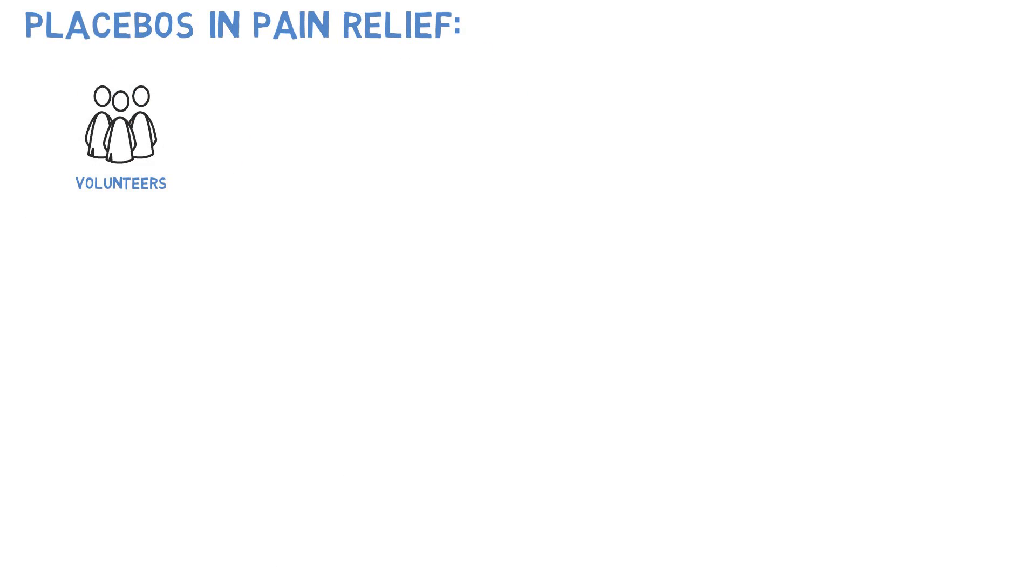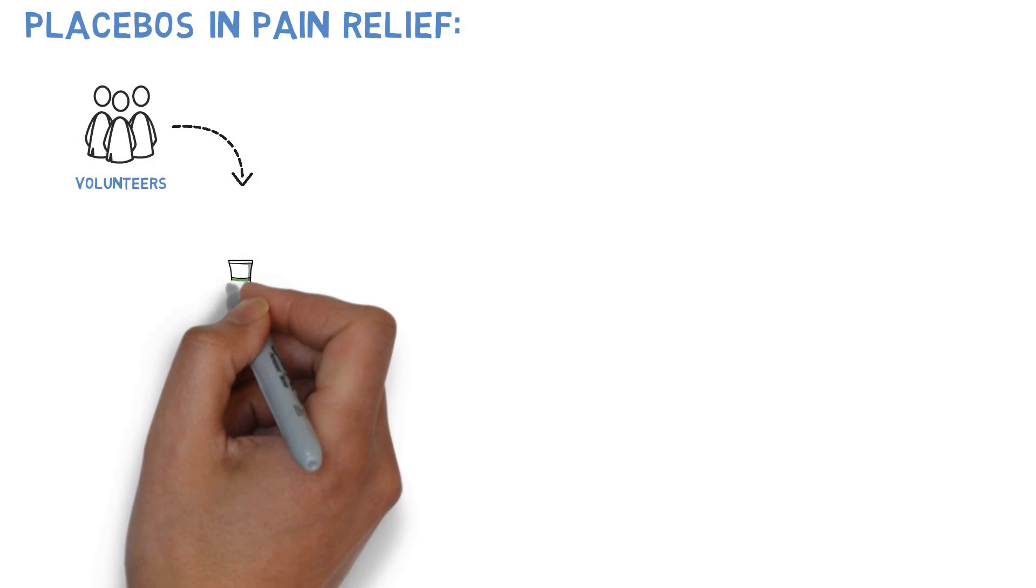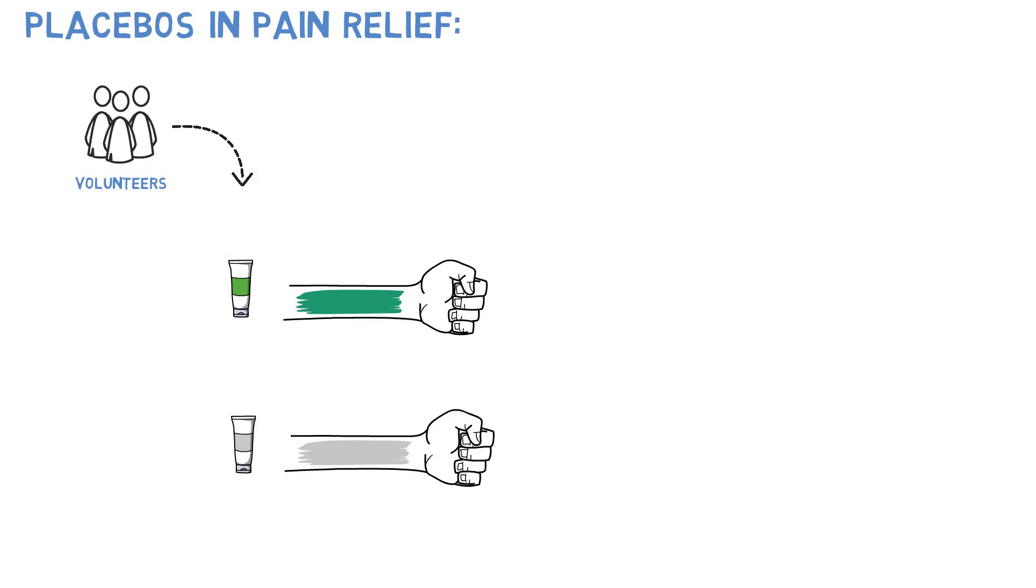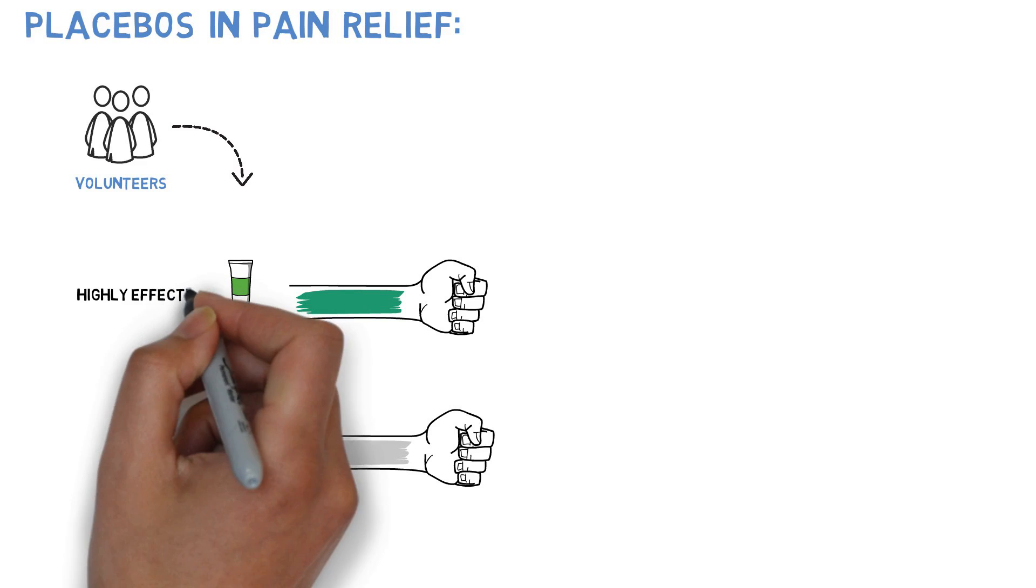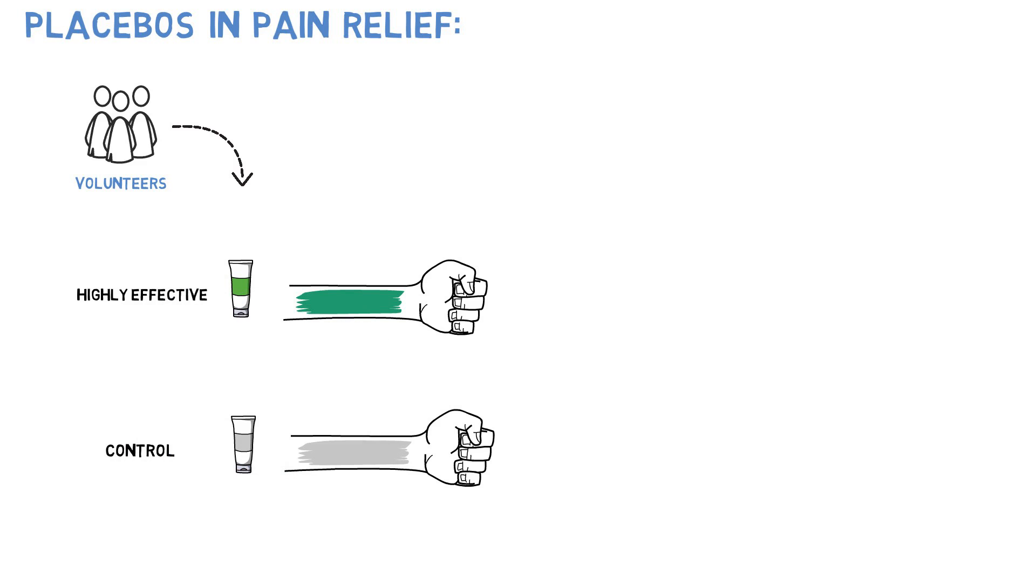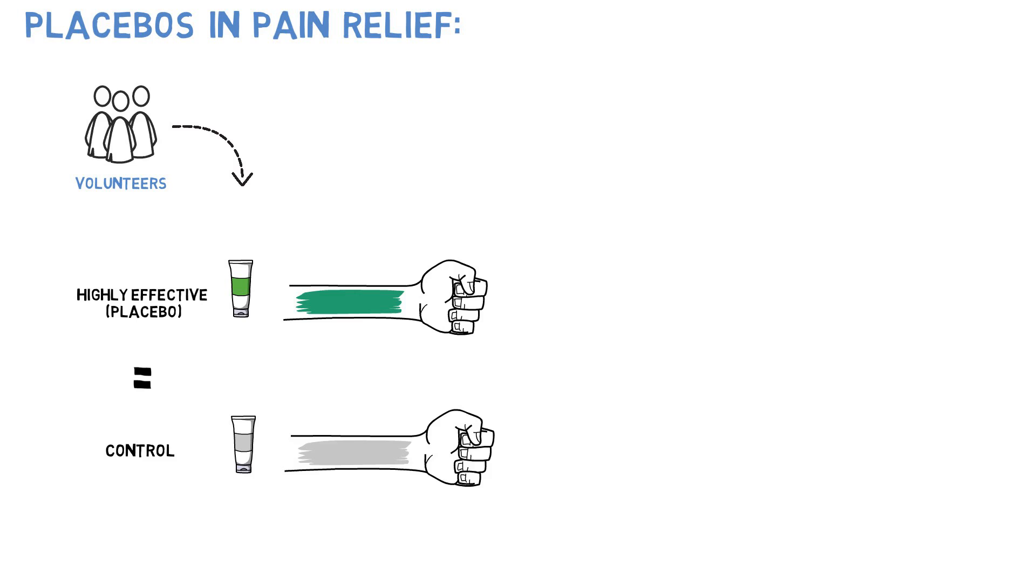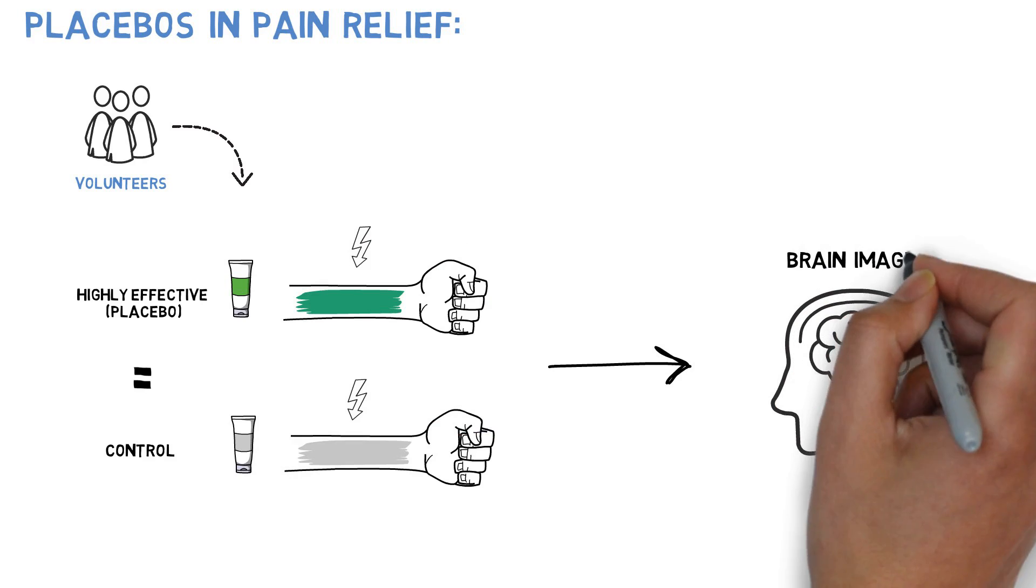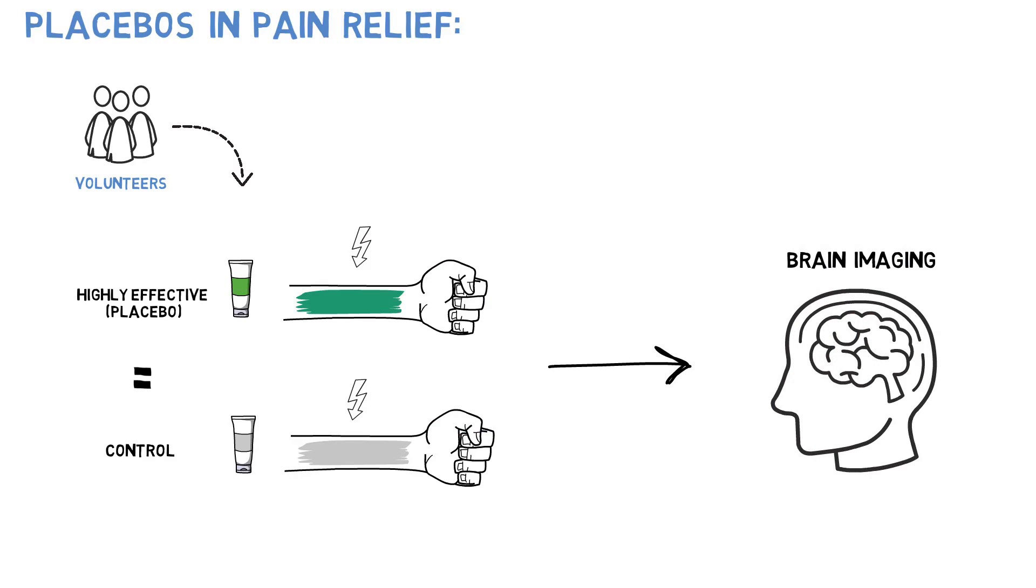A number of volunteer test subjects received two different lotions, one on each arm to prevent pain. They are told that one treatment is a highly effective pain reliever, and the other will have no effect. In reality, they are the same cream with no pain-fighting properties. Then, a mildly painful stimulus is applied to each arm, and scientists can image the patient's brains in real time to see how their brains respond to pain.